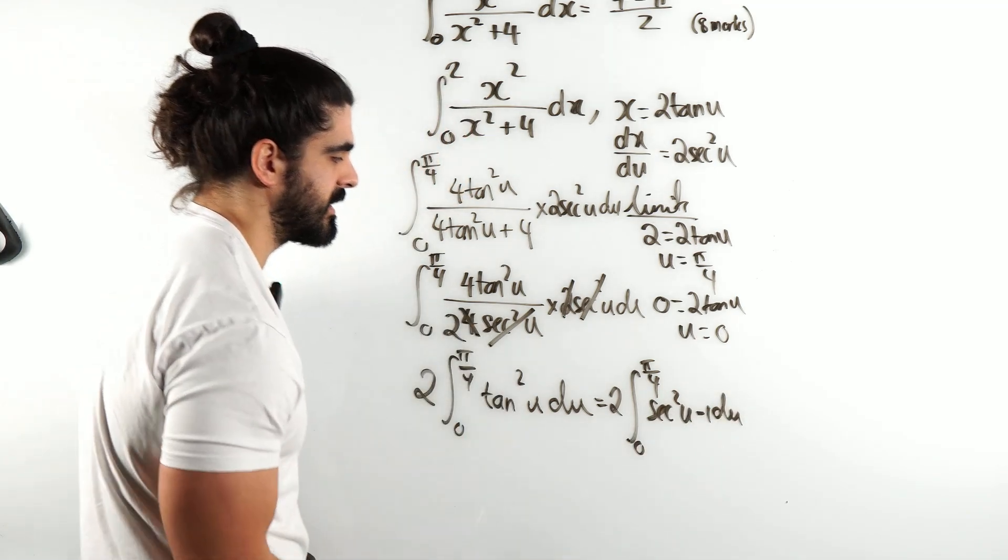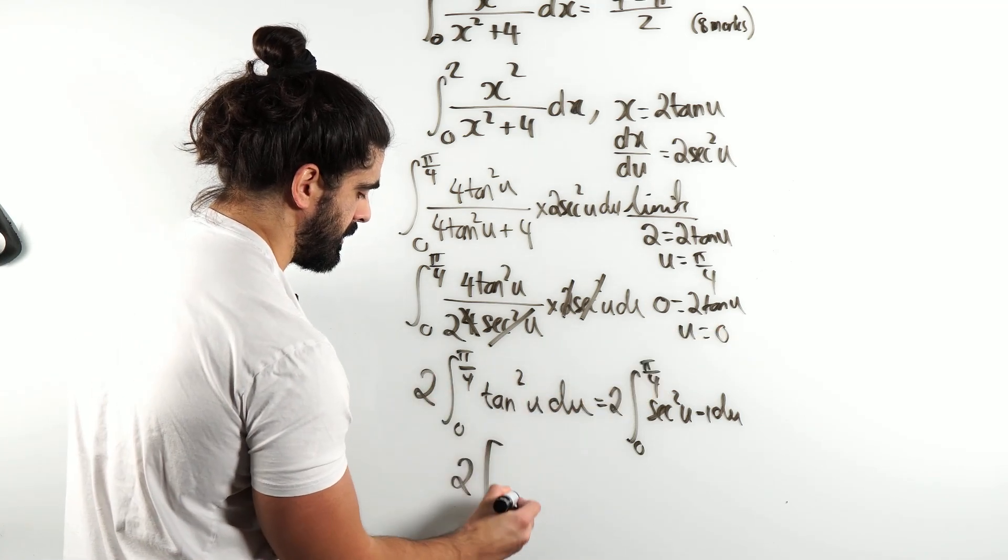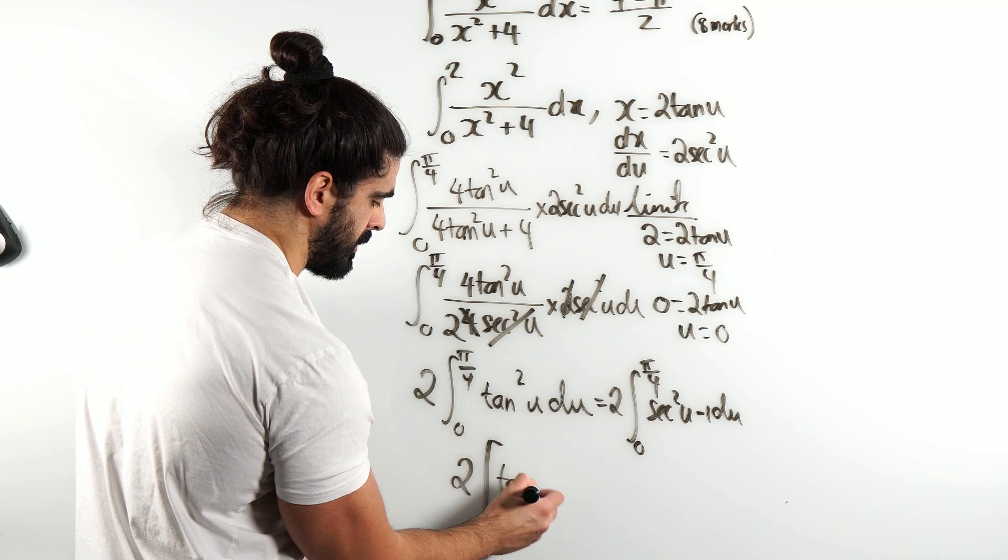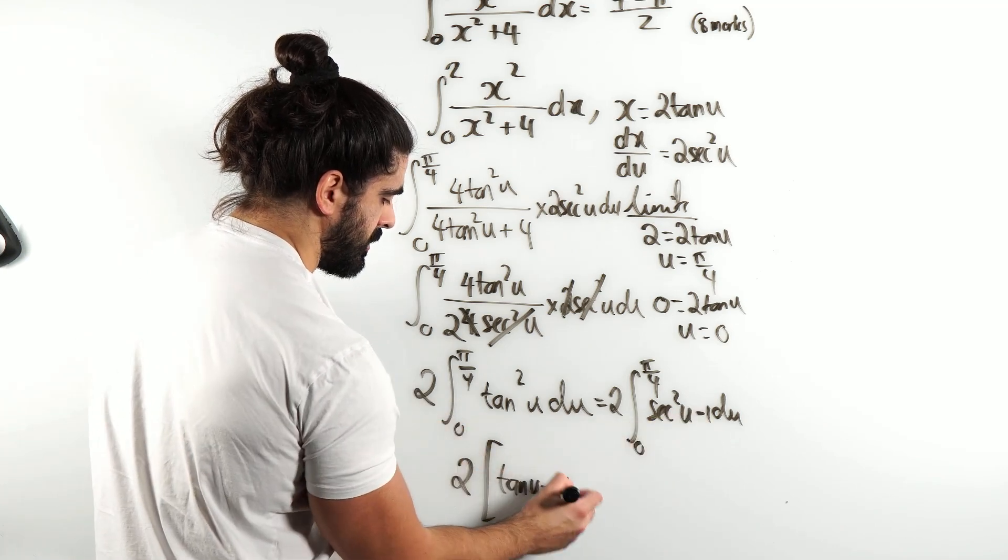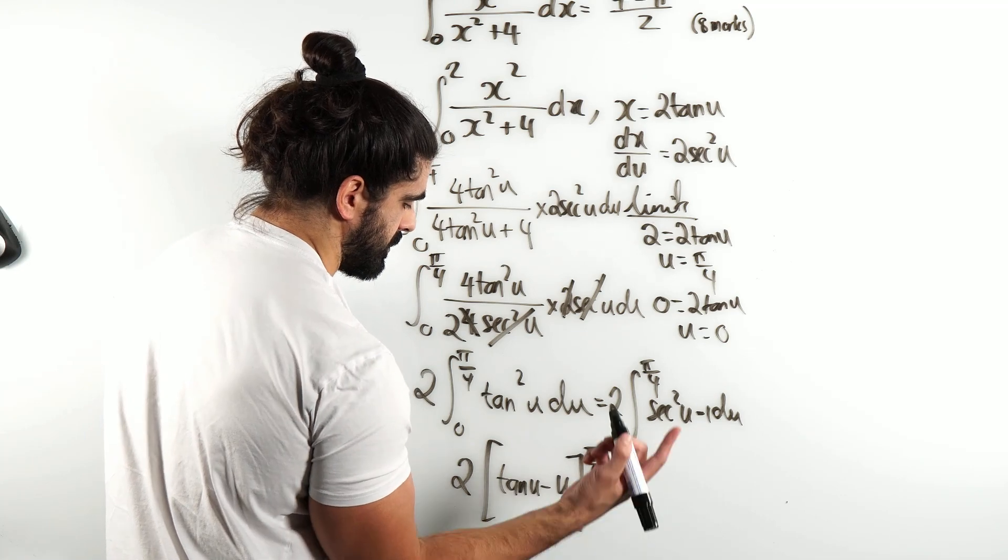Sec squared integrates to tan. Tan differentiates to sec squared. So we get 2[tan(u) - u] between π/4 and 0.